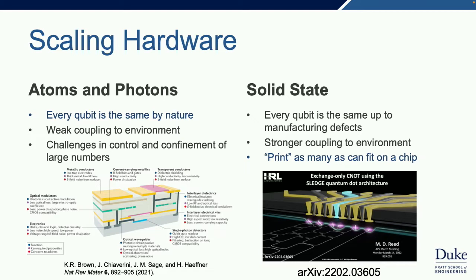When it comes to scaling hardware, there's a divide between atoms and photons—including NV centers and neutral atoms—where atomic systems are pretty well defined. Every single qubit is the same by nature; nature makes the atoms the same. There's usually weak coupling to the environment, but there are challenges in figuring out how to control and confine many of them. In ion traps, for example, we wrote a paper with researchers at Lincoln Labs and Berkeley dreaming about what ideal chips we could make if we could fabricate any sort of chips.